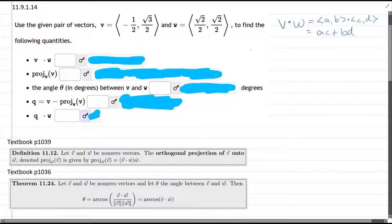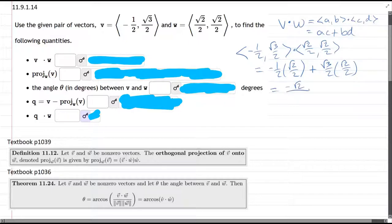You multiply the first two, so it's a times c plus b times d, and then you add those together. So our particular v and w, we have negative one-half, square root three over two, dot square root two over two, comma, square root two over two. So we're multiplying the first coordinates and then the second coordinates.